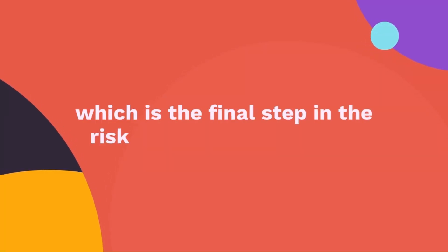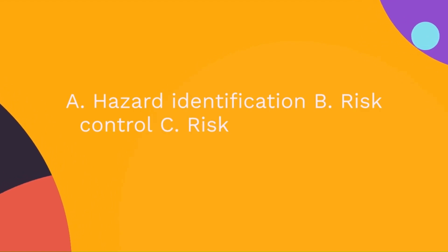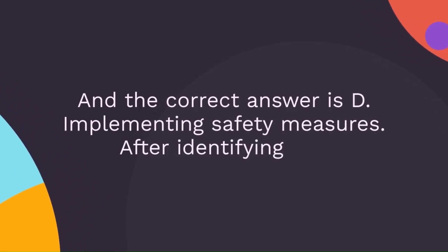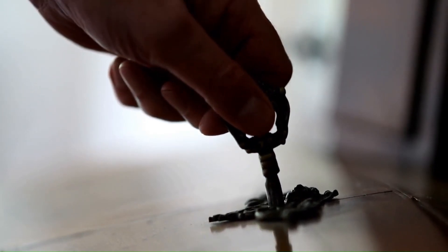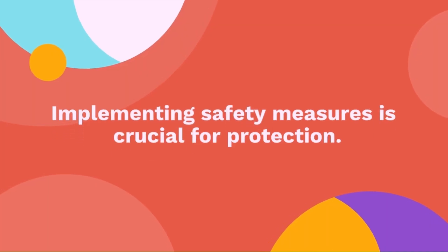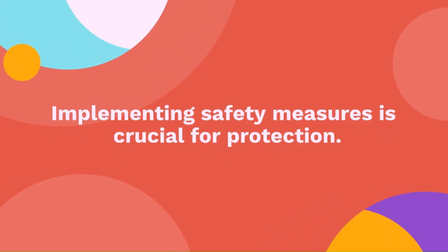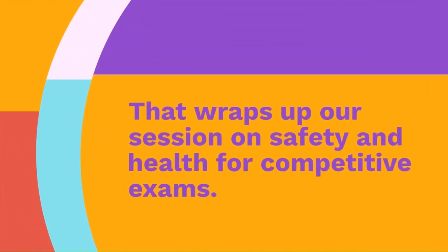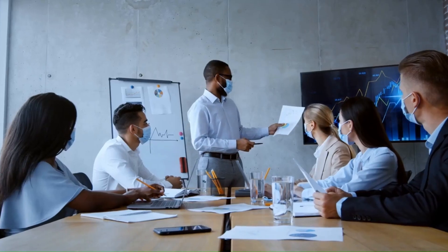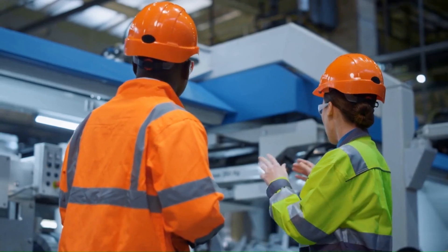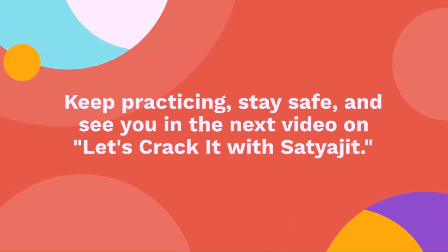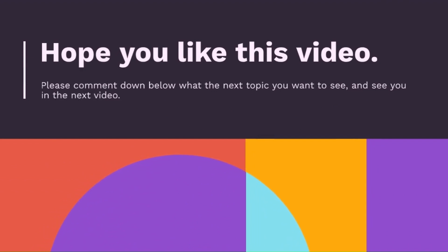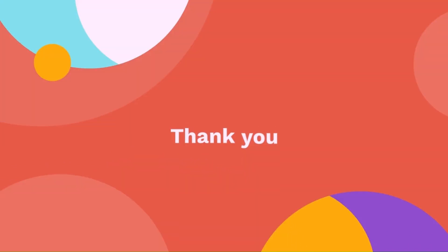Question 25: Which is the final step in the risk assessment process? Options are: hazard identification, risk control, risk evaluation, or implementing safety measures. The correct answer is implementing safety measures. After identifying and evaluating risks, the final step is to put safety measures in place, just like locking the door before you leave the house. That wraps up our session on safety and health for competitive exams. Mastering this concept is not just about passing your exams — it's about understanding how to create a safer workplace for everyone. Keep practicing, stay safe, and see you in the next video on Let's Crack It with Satyajit.